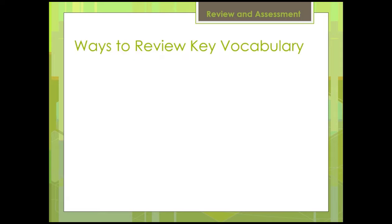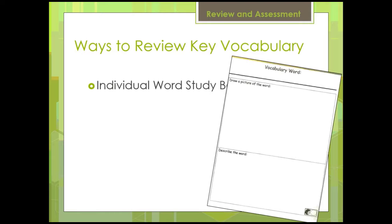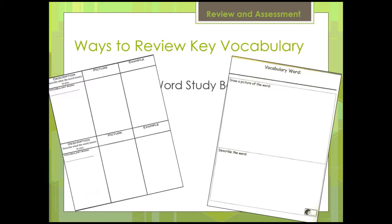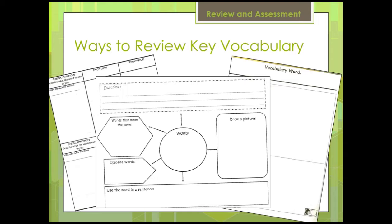Here are some ways to review key vocabulary. Individual word study books: the first is a kindergarten/first grade template where students write a description and draw a picture. For younger kids, they do their best to write a description or copy the teacher's description. The second template is for second grade, where students again write a description, draw a picture, and give an example. The last template can be used for upper grades.